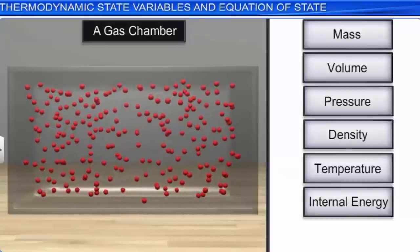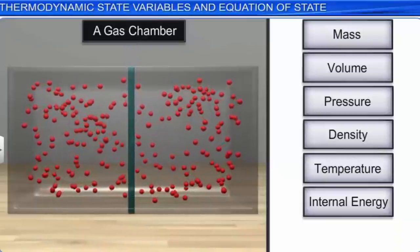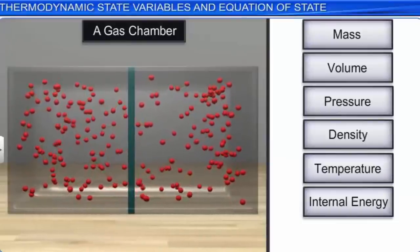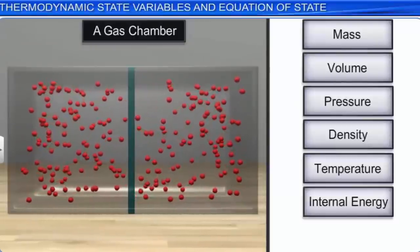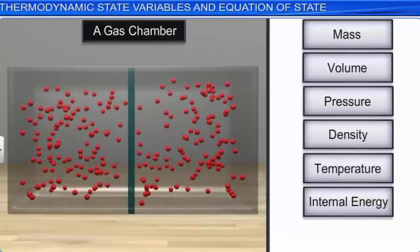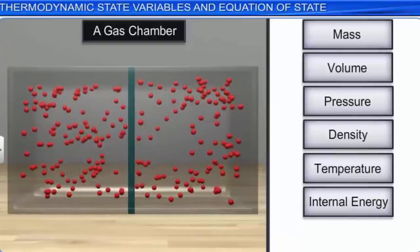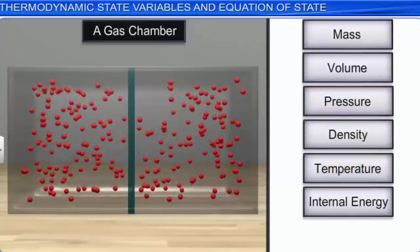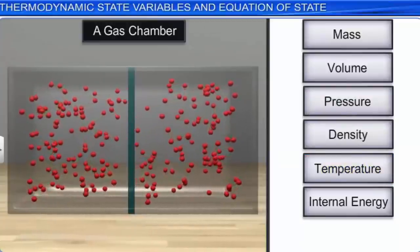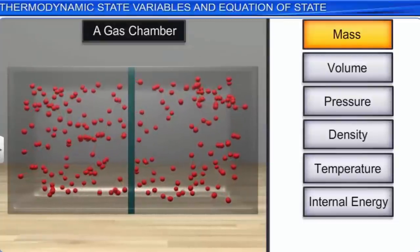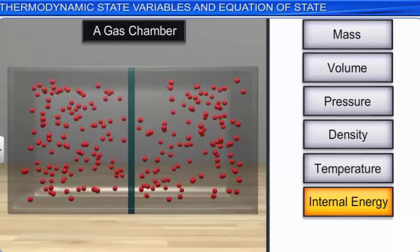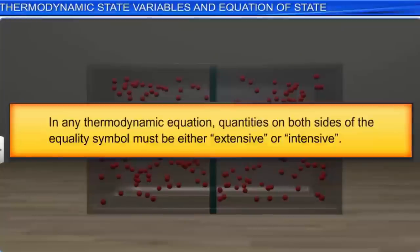Volume, mass, and internal energy are examples of extensive variables. Pressure and temperature do not depend on the size of the system and hence are intensive variables. If a system of gas in equilibrium is divided into two equal parts, the variables that remain unchanged are intensive, and variables whose values are halved are extensive. Pressure, density, and temperature are intensive; mass, volume, and internal energy are extensive. In any thermodynamic equation, quantities on both sides of the equality symbol must be either both extensive or both intensive.